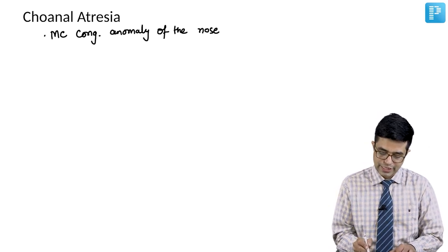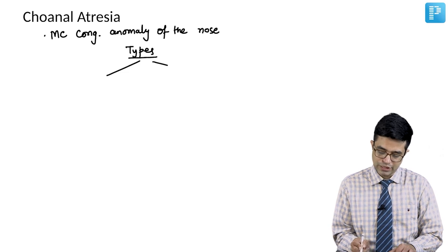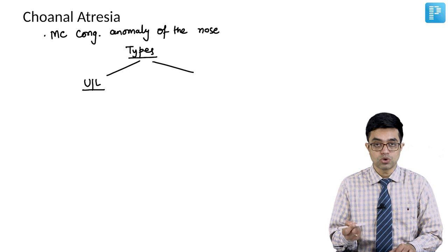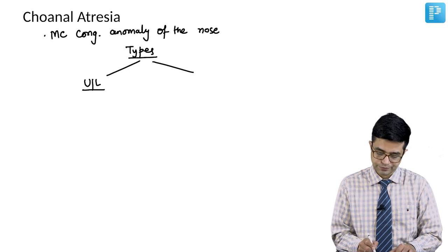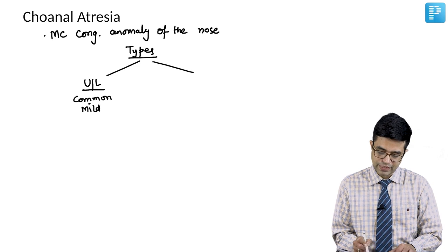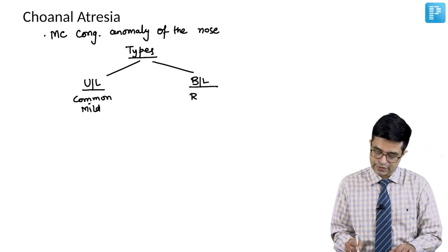It is the most common congenital anomaly of the nose. Choanal atresia can be of two types: unilateral, which is more common but usually mild in nature, and bilateral choanal atresia, which is rare but more severe in nature.